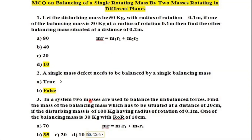Second question: a single mass defect needs to be balanced by a single balancing mass. This is false — it is not mandated that it has to be balanced by a single mass alone. There are four cases. A single mass defect lying on a single plane can be countered with the help of different masses lying on different planes, with the defective mass either at the center or at either side of it.